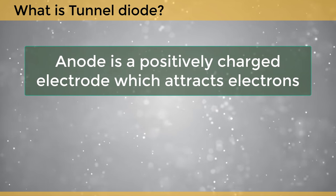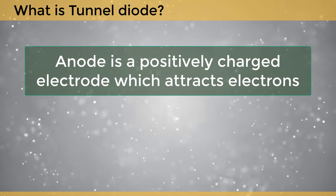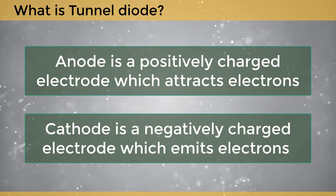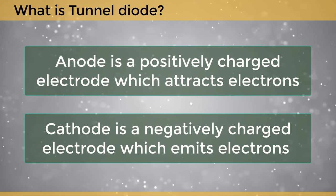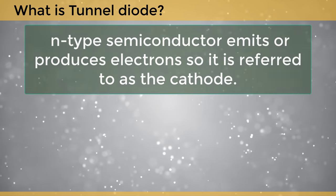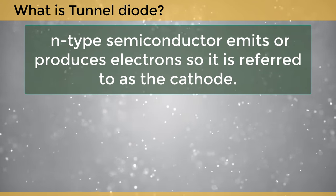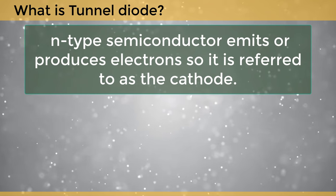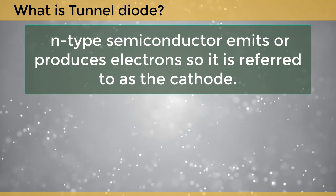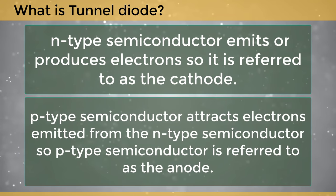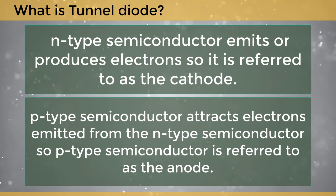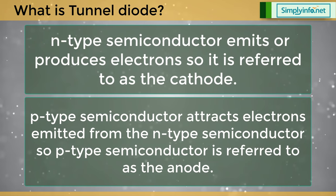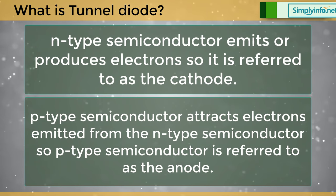An anode is a positively charged electrode which attracts electrons, whereas a cathode is a negatively charged electrode which emits electrons. In a tunnel diode, the n-type semiconductor emits or produces electrons, so it is referred to as the cathode. The p-type semiconductor attracts electrons emitting from the n-type semiconductor, so it is referred to as the anode.